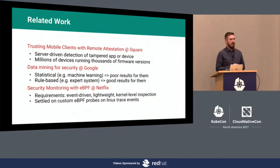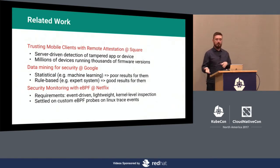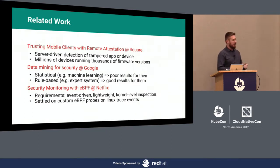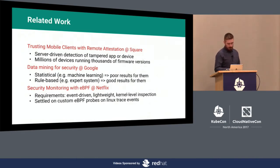The system must also be lightweight — when you have a lot of nodes, the performance overhead scales really quickly and gets very expensive. They also wanted kernel-level inspection, because with how many attacks against the Linux kernel being released today — entire open source frameworks full of exploits — the time between someone exploiting a vulnerability and publishing the exploit versus patching your kernel across your entire fleet makes that a really hard battle to win. What Netflix settled on were eBPF probes: programmable, lightweight, safe probes that you can run in the kernel on Linux trace events.